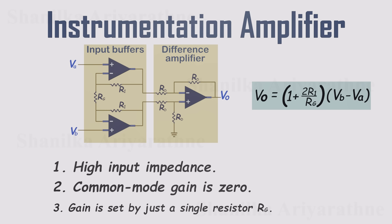And finally, the overall gain is controlled by a single resistor, RG, making it simple and flexible to adjust. And that wraps up our look at instrumentation amplifiers.